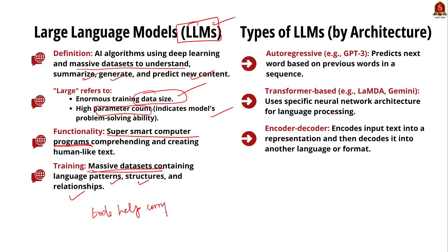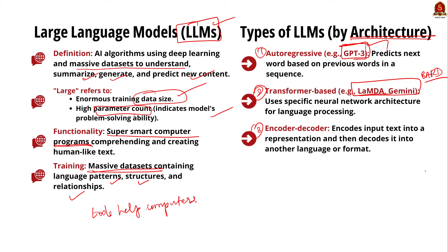On the basis of architecture, large language models are of three types: auto-regressive, transformer-based, and encoder-decoder. GPT-3 is an example of an auto-regressive model, as it predicts the next word in a sequence based on the previous words used. Lambda or Gemini, formerly called BARD, are transformer-based models that use a specific type of neural network architecture for language processing. Encoder-decoder models encode an input text into a representation and then decode it into another language or format.